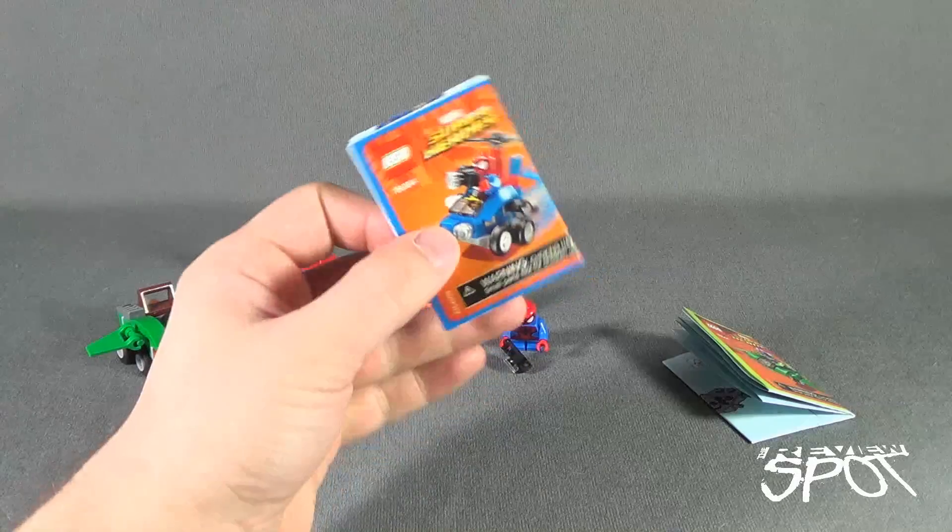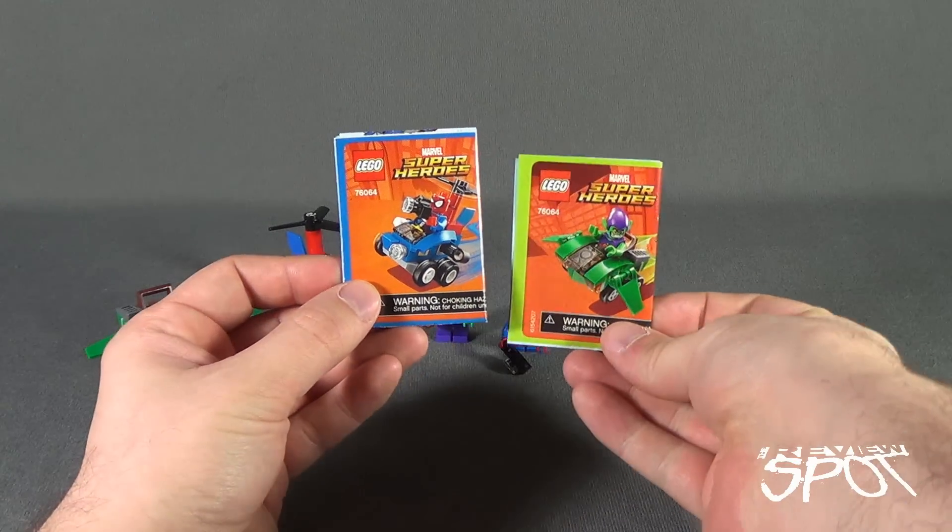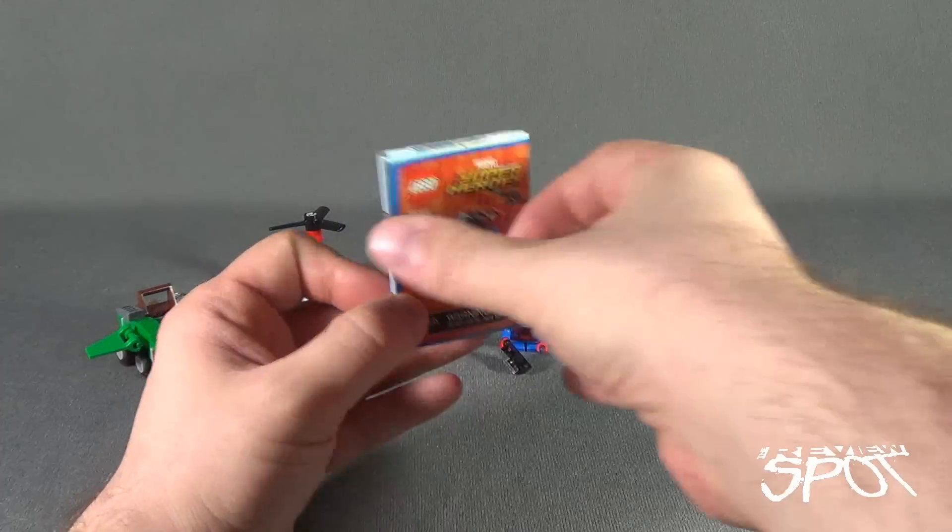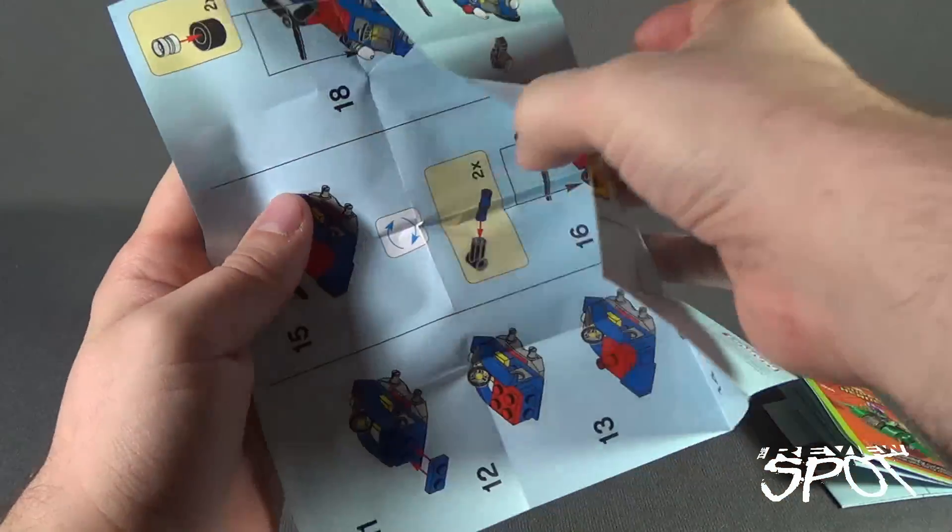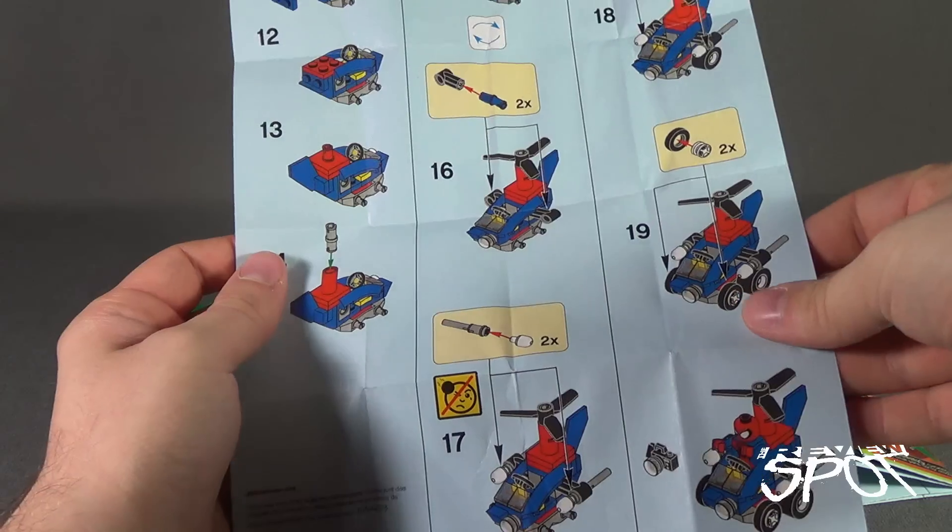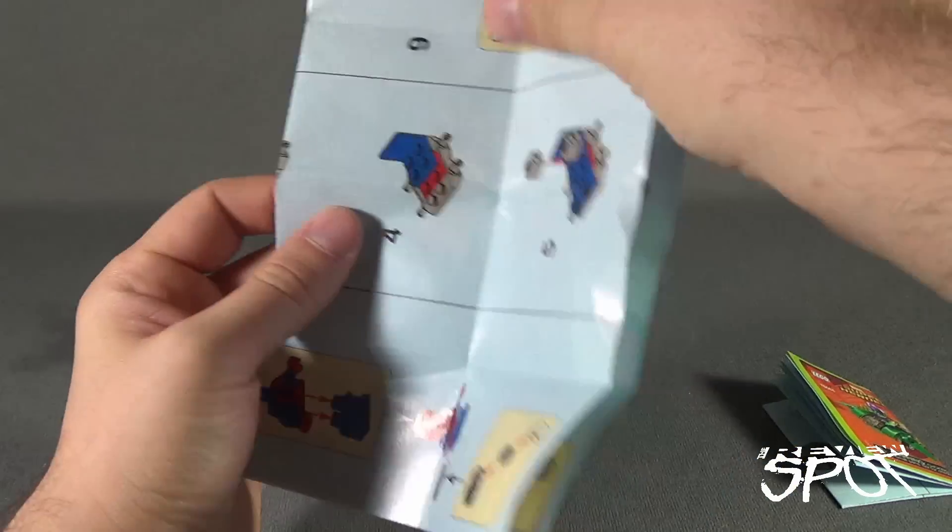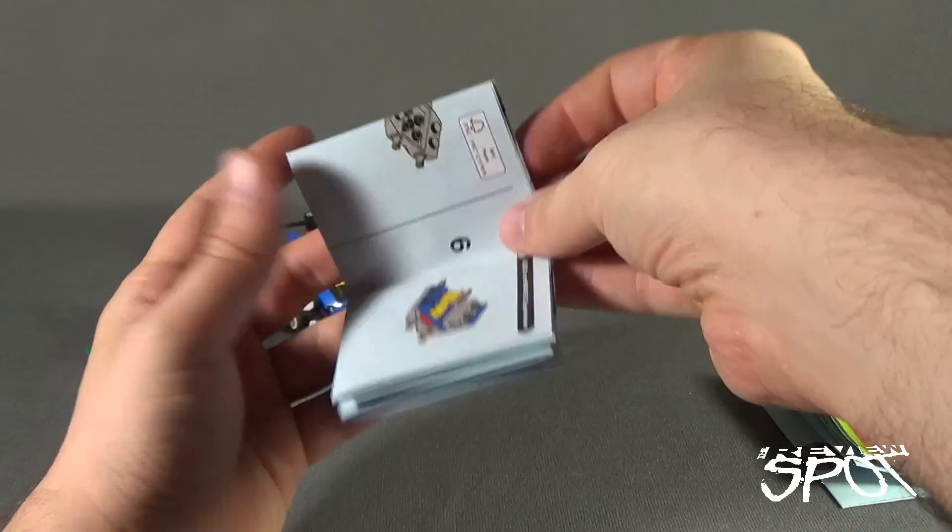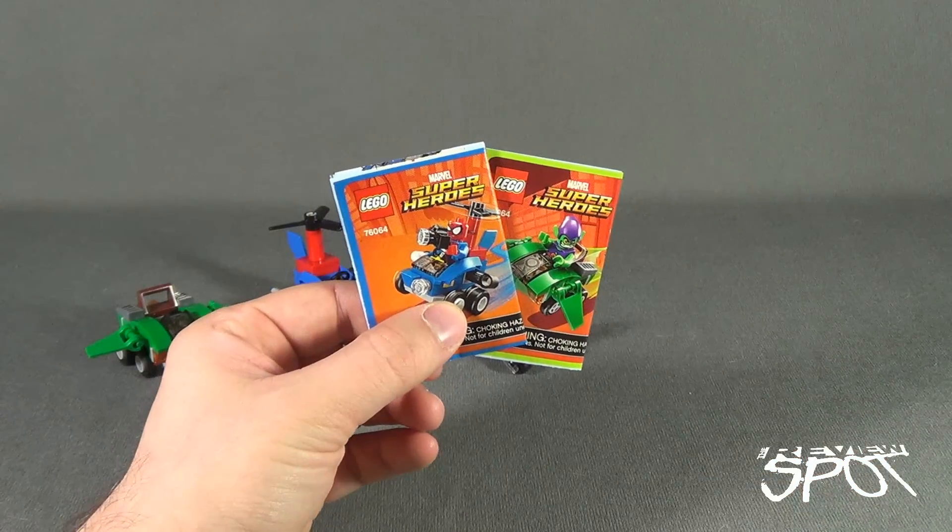Like when we had a look at the other Mighty Macros, both Spider-Man and Green Goblin come with their own respected instruction manual. The instruction manual is extremely easy to put together. It's just simply two sides, a total of 19 steps front to back, very easy. Once you start building enough of these, you kind of already know what to expect.